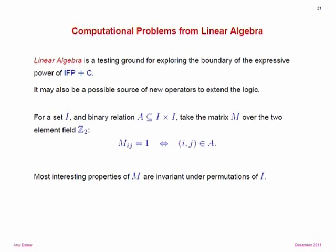When I talk about problems from linear algebra, think of it this way. If you have an arbitrary set I and a binary relation on it, we can think of this binary relation as a matrix, a 0-1 matrix. Usually when you think of a matrix, you have an ordering on the rows and the columns, which imposes an ordering on the set I. We want to avoid this ordering at all costs — we are looking for order-invariant properties. But there are many natural properties of the matrix which are invariant under permutations of I.